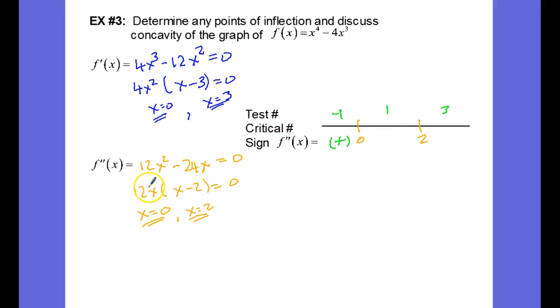Plugging in 1, we have 1 times 12 is positive, 1 minus 2 is negative 1, that's negative, positive times a negative is a negative.